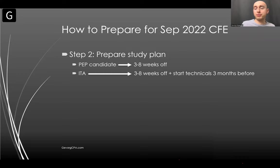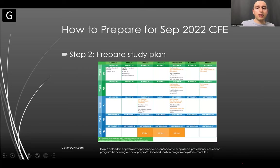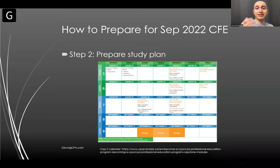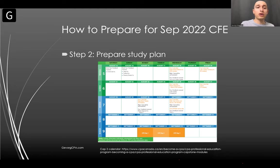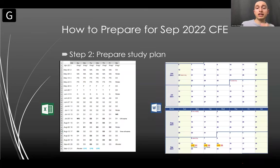ITA — internationally trained accountants challenging the CFE — should take three to eight weeks and start technical review three months in advance since they haven't gone through the PEP program. There's a sample study plan in Capstone 2 — you can Google 'Capstone 2 calendar' and download it for September 2022. It shows what cases to submit and when they're due. I recommend building your own study plan in Excel or Word, planning specifically per week — what FR to study, which case to do, which MA topics — and give yourself at least one day off to avoid burnout.